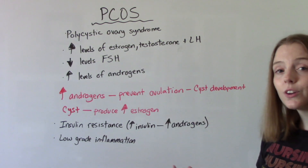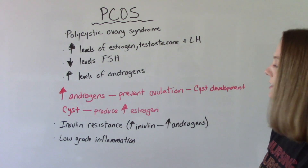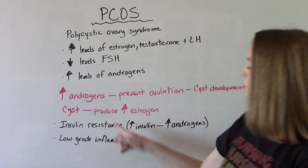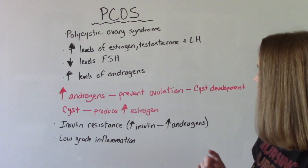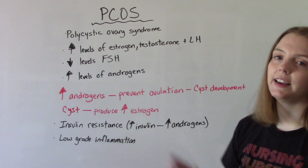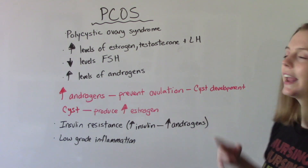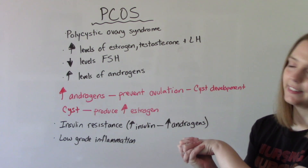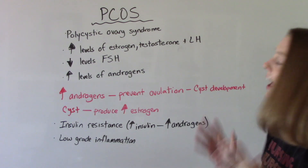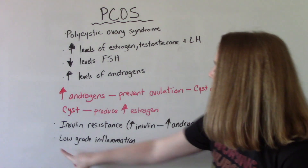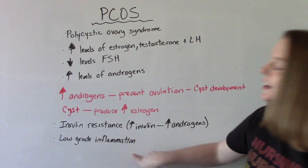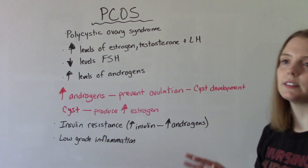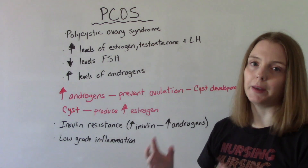PCOS is also characterized by insulin issues — specifically insulin resistance. Increased insulin in the body leads to increased androgens in the body, so they kind of go hand in hand. The last thing is low-grade inflammation; people who have PCOS have chronic inflammation.